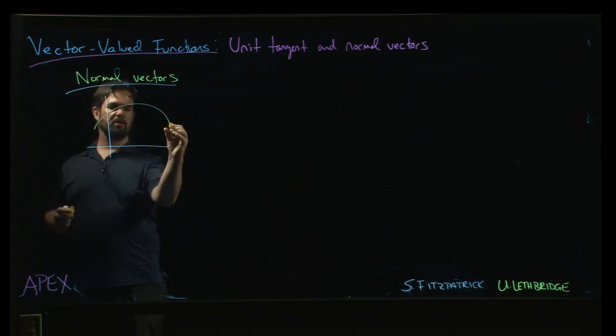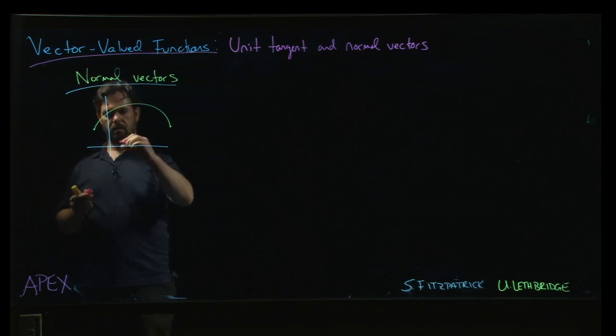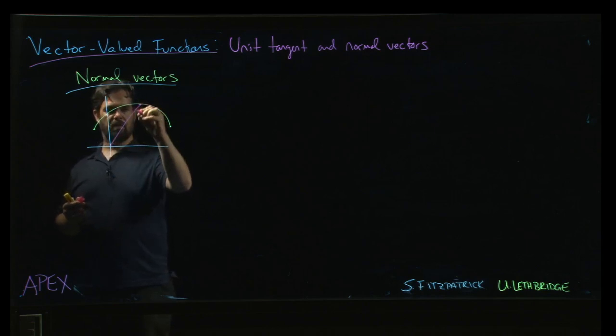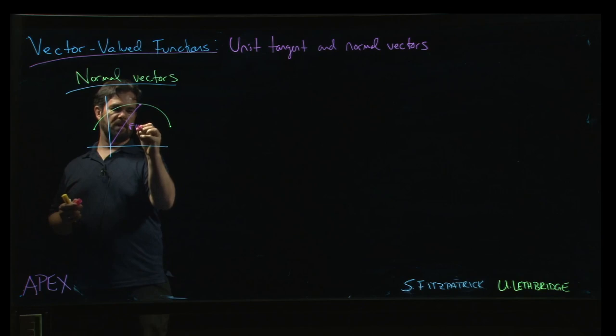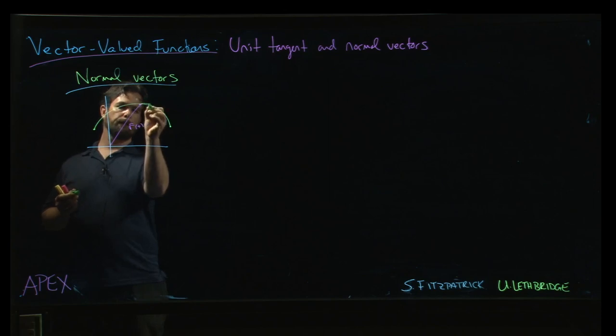I mean, if you think about it, here's maybe a curve, given by some vector-valued function. And so you can imagine that we have r of t, and then we have r prime of t.